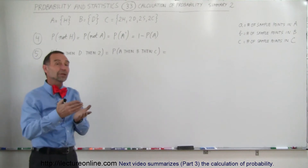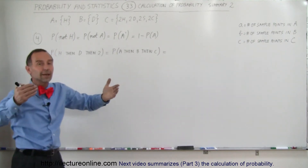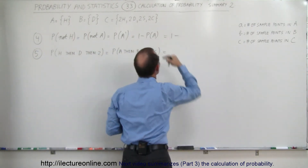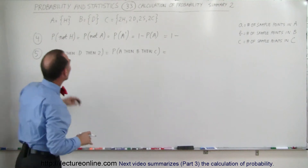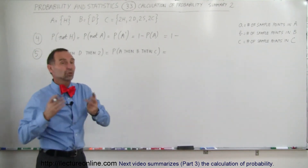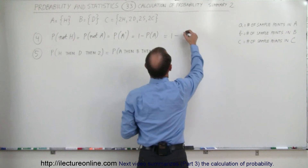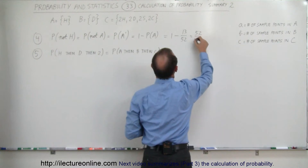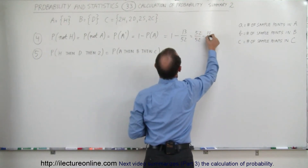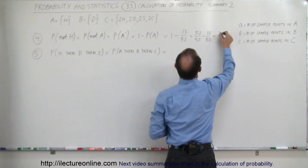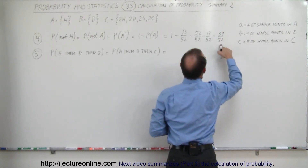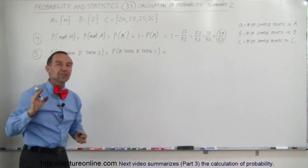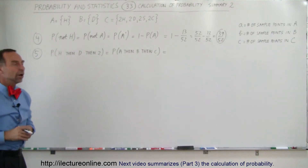If you find the probability of not A, it's simply the probability of everything minus the probability of A. So in this case, this is equal to 1 minus the probability of getting a heart. There are 13 hearts in a deck and 52 cards total, so it would be 1 minus 13/52, which is 52/52 minus 13/52, equal to 39/52. That is the probability of not getting a heart.